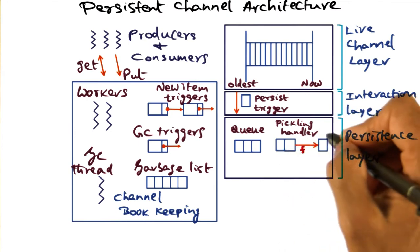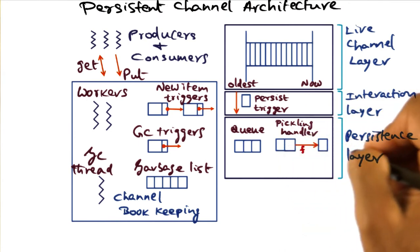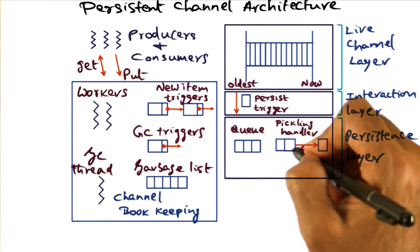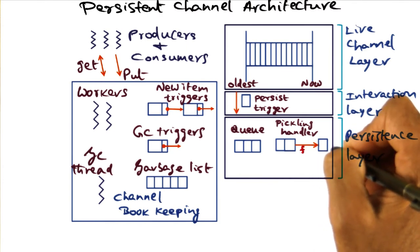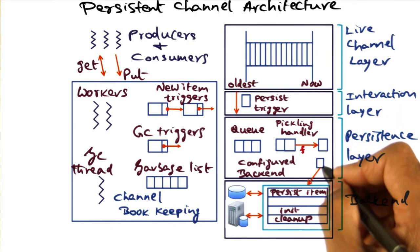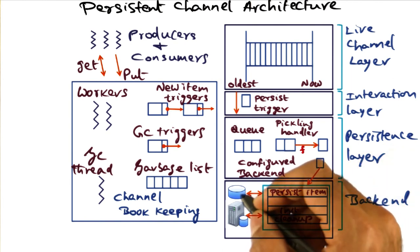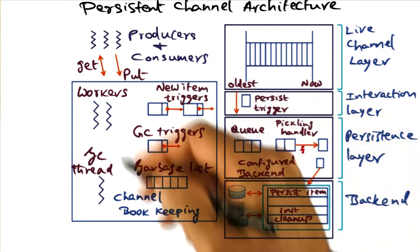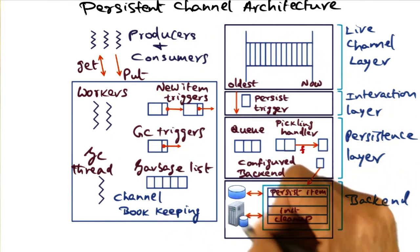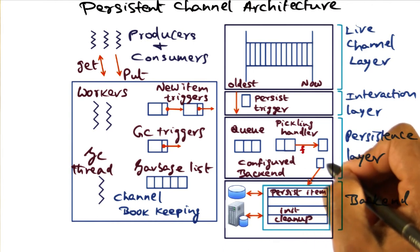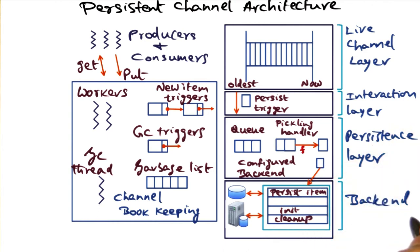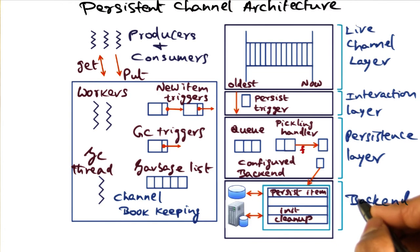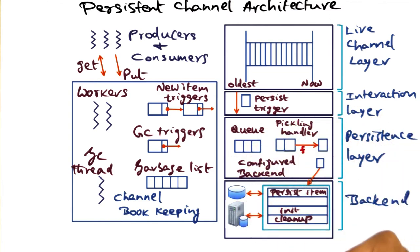The runtime system, when working on persistence, will automatically apply the application-specified function on the items that need to be persisted to create a digest, which will then be persisted. Items that need to be persisted necessarily have to go to non-volatile storage devices. The PTS architecture supports several different configured backends to store items that need to be persisted. The backend layer is the third layer in the channel architecture, and PTS supports several different backends to support the persistence activities.